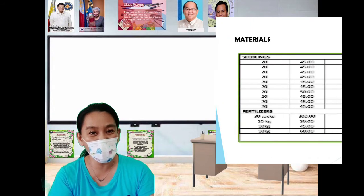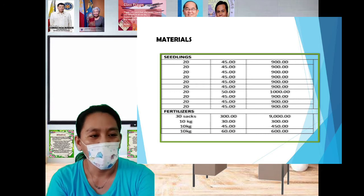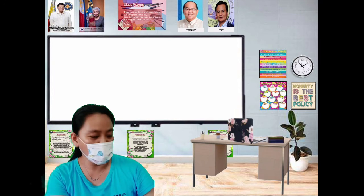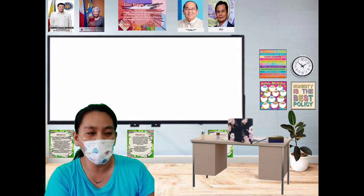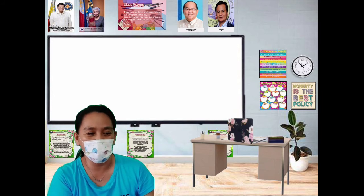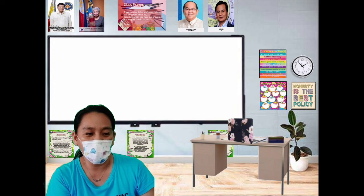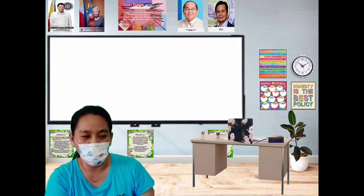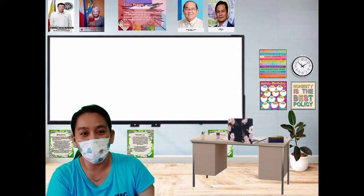We also have the seedlings. For seedlings, we have hybrid eggplant and ordinary eggplant, tomato, pepper, okra, ampalaya, squash, pepino, patola, and sitaw. For fertilizers, we have organic fertilizers, Urea 46-0-0, 16-20-0, and 14-14-14. The total for materials, tools, and equipment comes to 40,335 pesos.